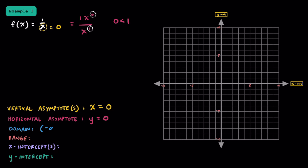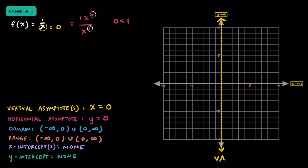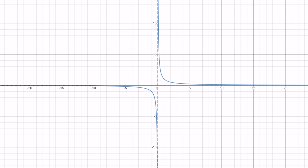For the domain, x can equal anything except for 0, so we can say negative infinity to 0, and 0 to infinity. For the range, the y values include anything except for 0, so we can say from negative infinity to 0, and from 0 to infinity. Since x and y are not allowed to equal 0 for this function, there is no way that this function is going to have any x or y intercepts. Here's what our vertical asymptote would look like, and here's our horizontal asymptote. To graph this, you can just choose some x values, plug them into your function, get some y values, and plot those points.